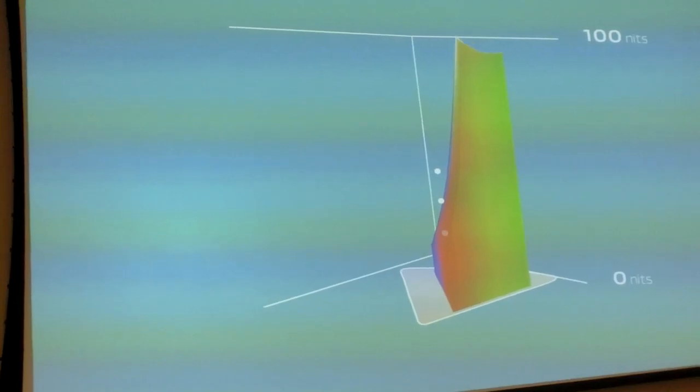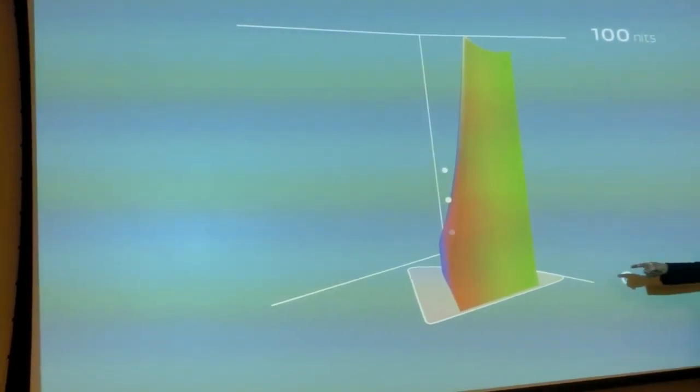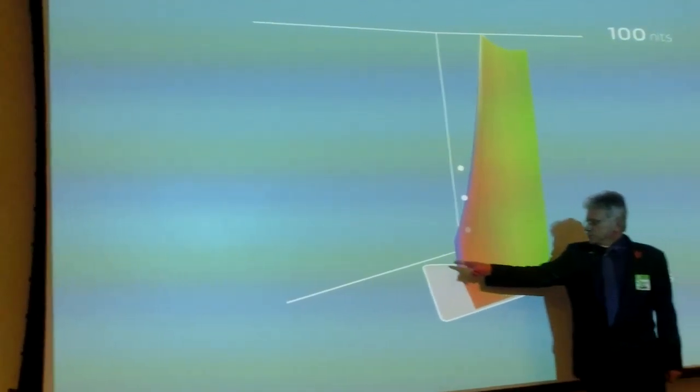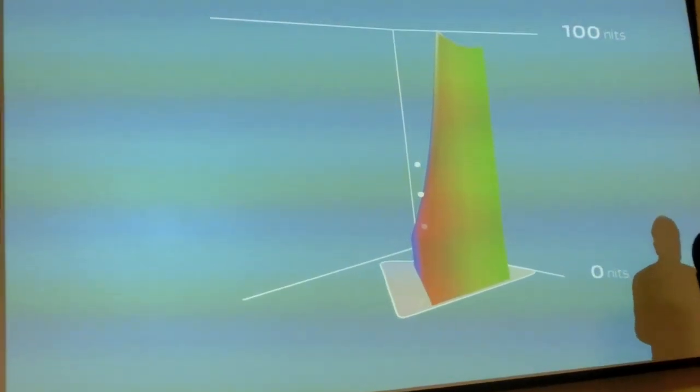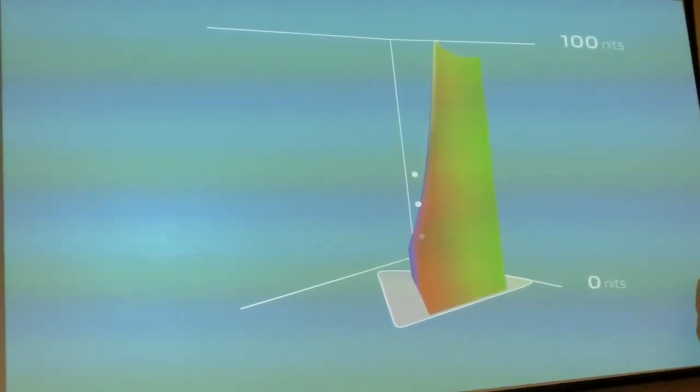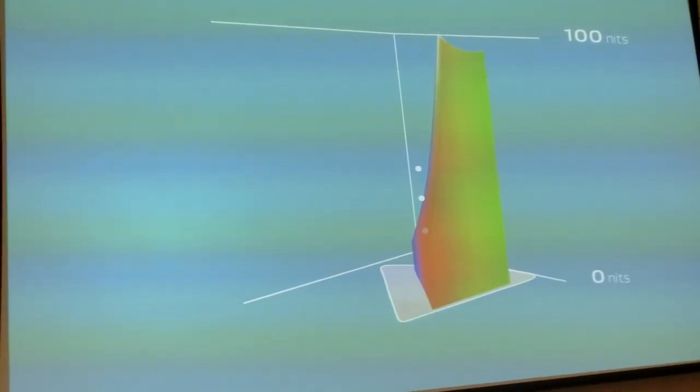I want to make a point here. When you see that horseshoe diagram, it tells you the colors that are available. But it tells you nothing about how bright those colors are.